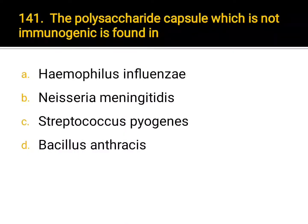The polysaccharide capsule which is not immunogenic is found in: A. Haemophilus influenzae, B. Neisseria meningitidis, C. Streptococcus pyogenes, D. Bacillus anthracis. Correct answer: D. Bacillus anthracis.